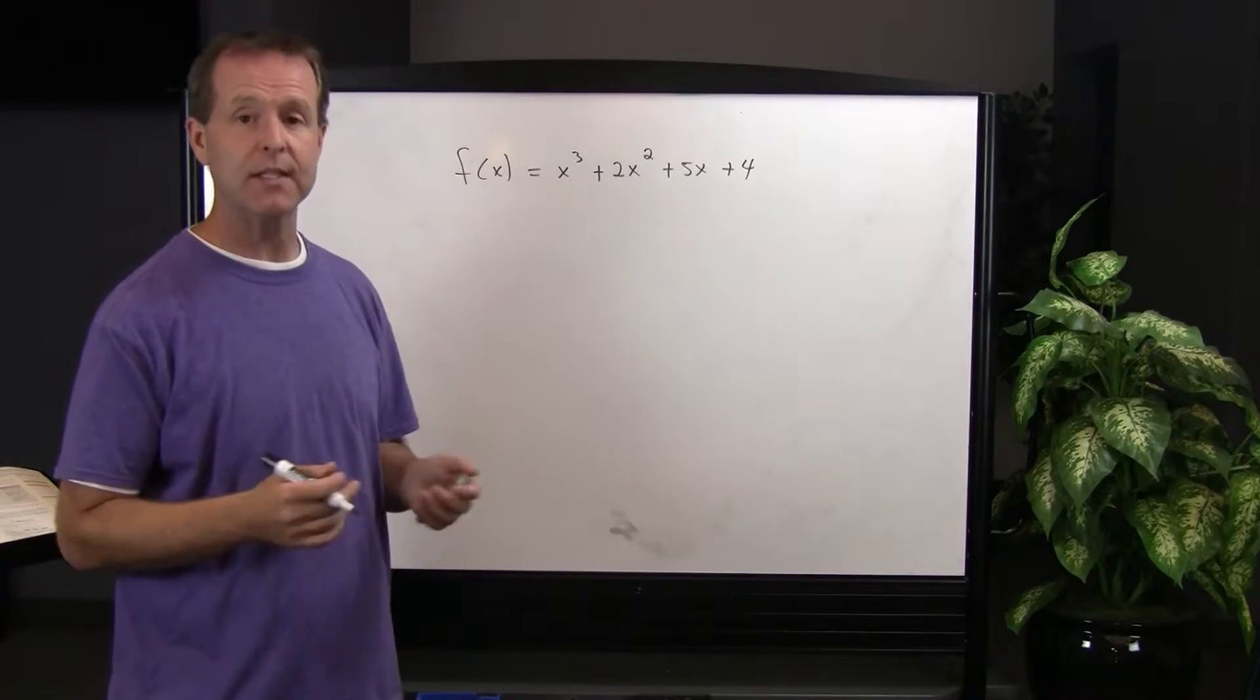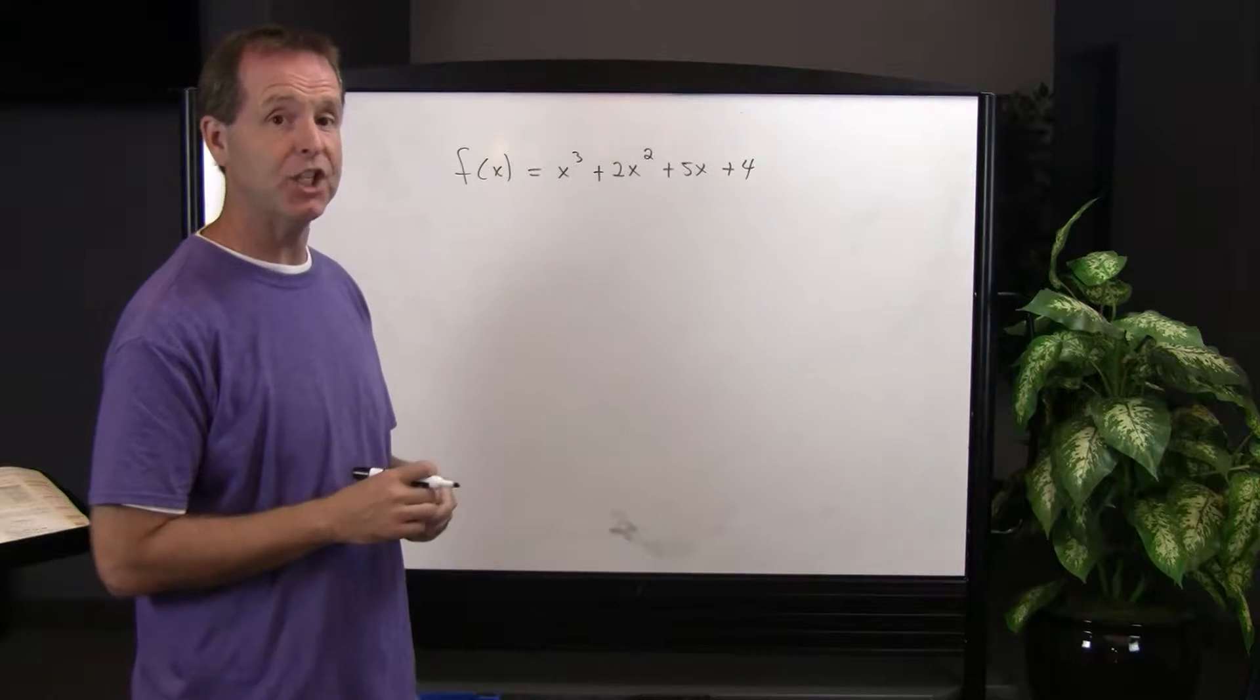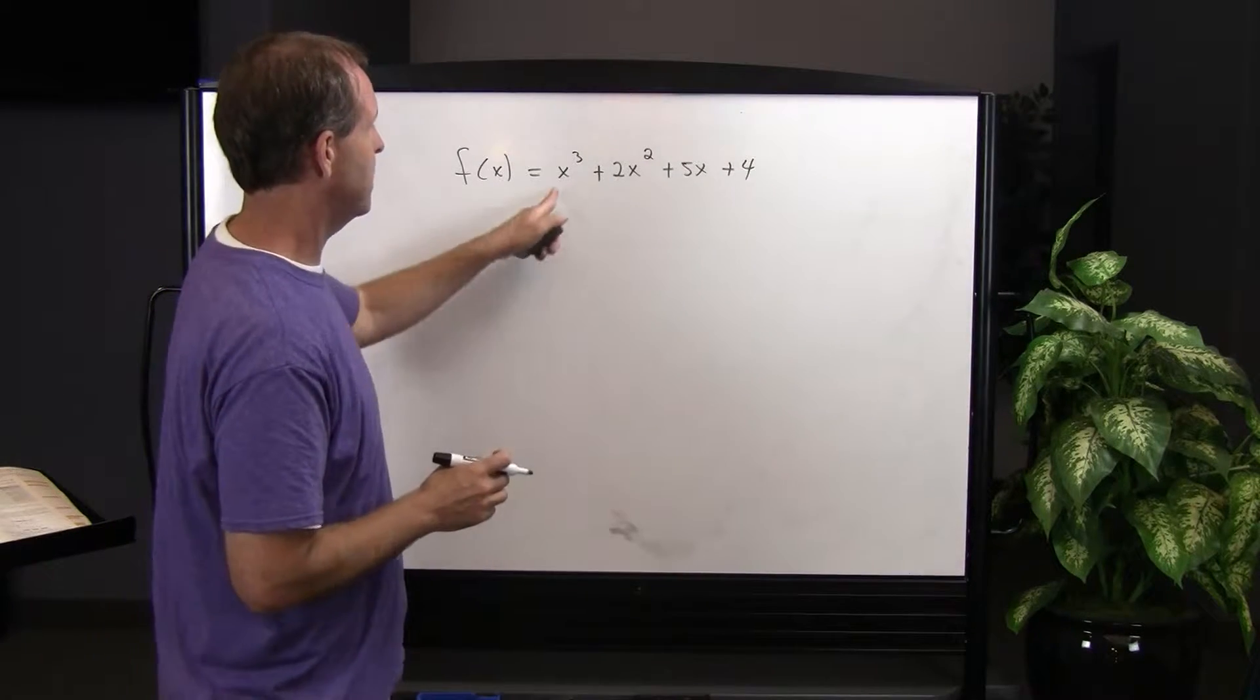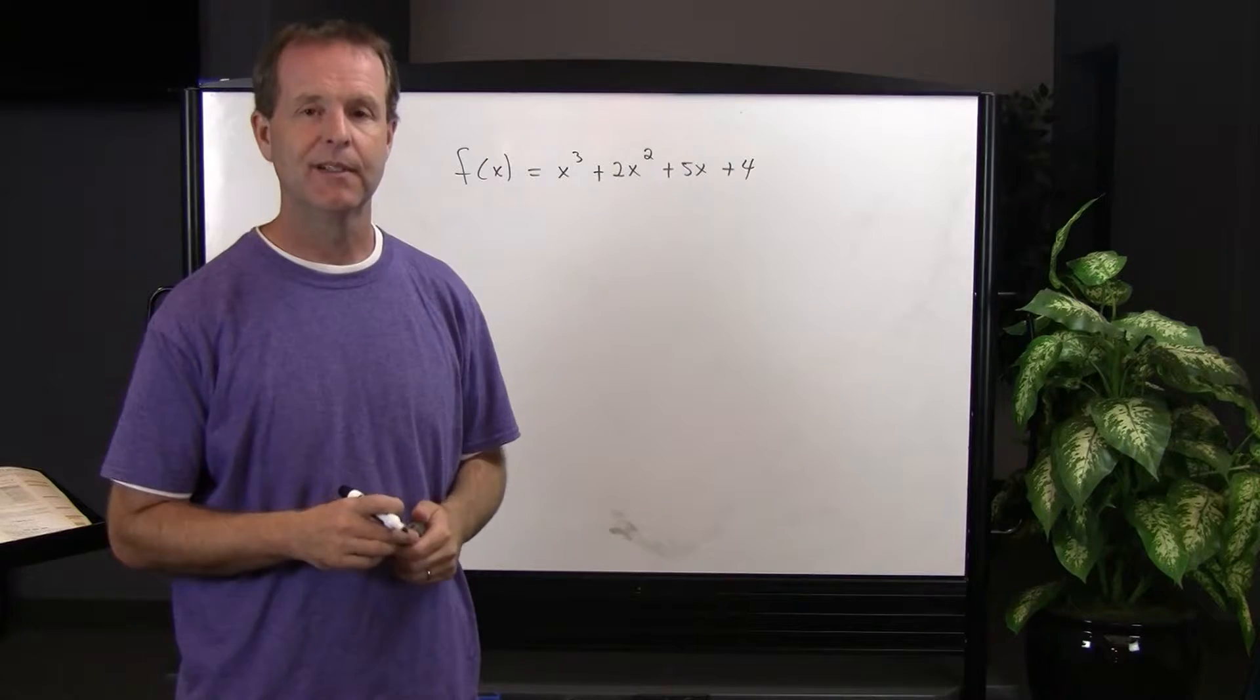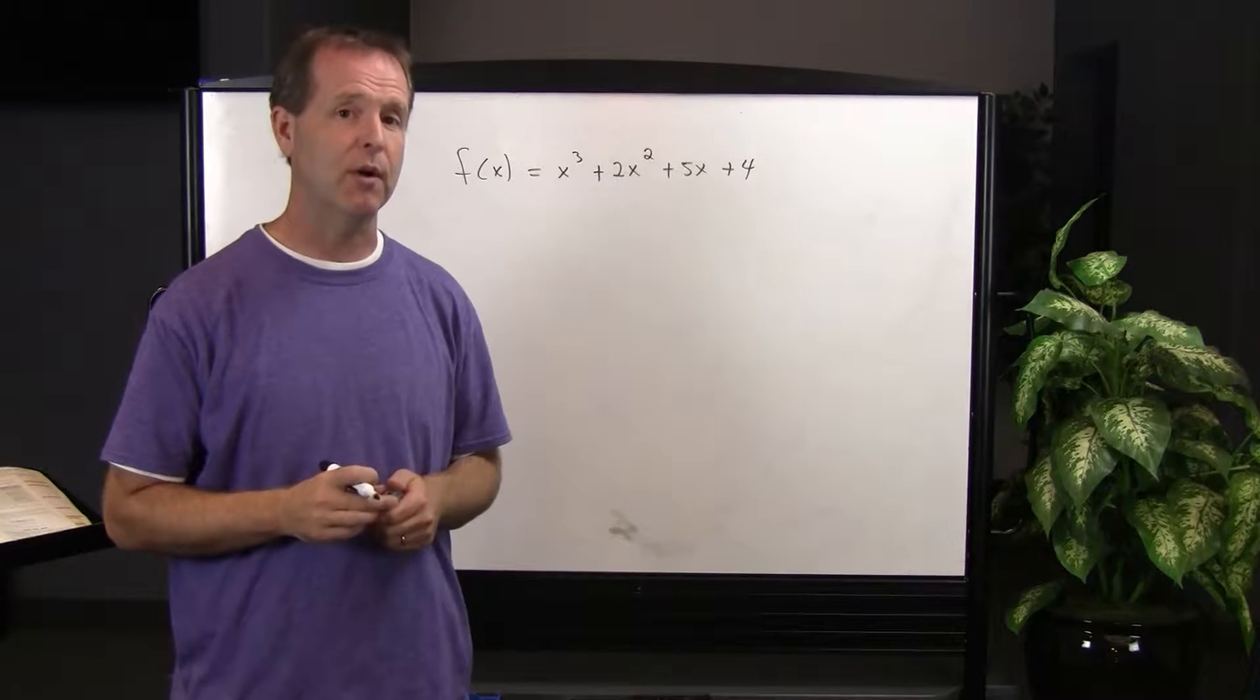So first of all, to find the positive real zeroes, we look at how many times does the sign change between terms. Well, since all the terms are positive, we know that there are no positive real zeroes.